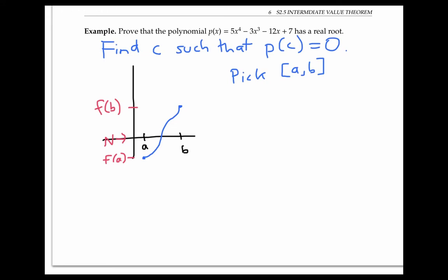I'm just going to use trial and error here and calculate a few values of p. So p(0) is easy to calculate—p(0) is just 7. p(1) is going to be 5 minus 3 minus 12 plus 7, which equals negative 3.